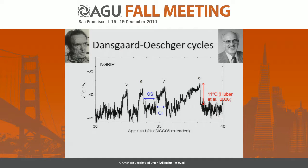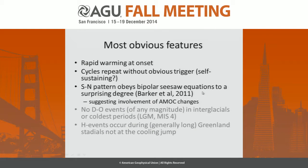What we tried to do was look at what are the key features of Dansgaard-Oeschger events. The first obvious one, which tends not to be emphasized by most explanations, is the incredibly rapid warming at the beginning of Dansgaard-Oeschger events — rather than the cooling, which is what we generally seem to be trying to explain.